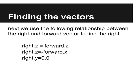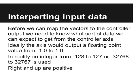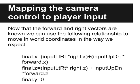Next we can find the right vector using the relationship below. Ideally, we would interpret the values we get from the controller as values from negative 1 to 1, but in reality it may be a range of integers such as negative 128 to 127. With the forward and right vectors obtained, we can now use the relationship below to map the camera to the world coordinates.